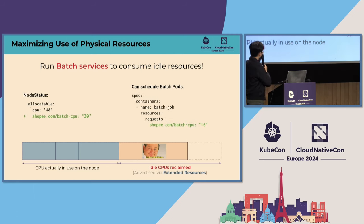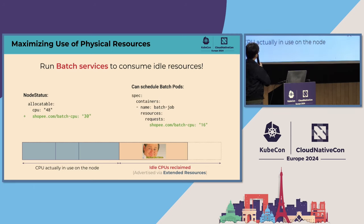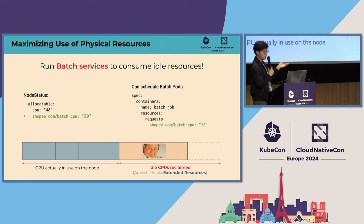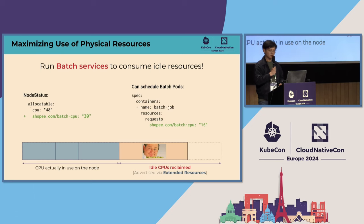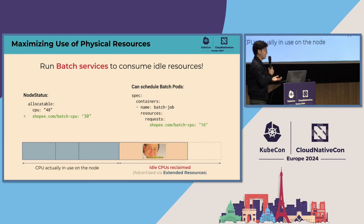Here is an example of what the advertised extended resource might look like. We advertise a batch CPU of 30 cores. This way, we can actually run pods that don't consume any allocatable CPU — instead, they consume the extended resource, the batch CPU resource that we have reclaimed earlier. And this way, we can actually run more pods on top of what we currently can offer.